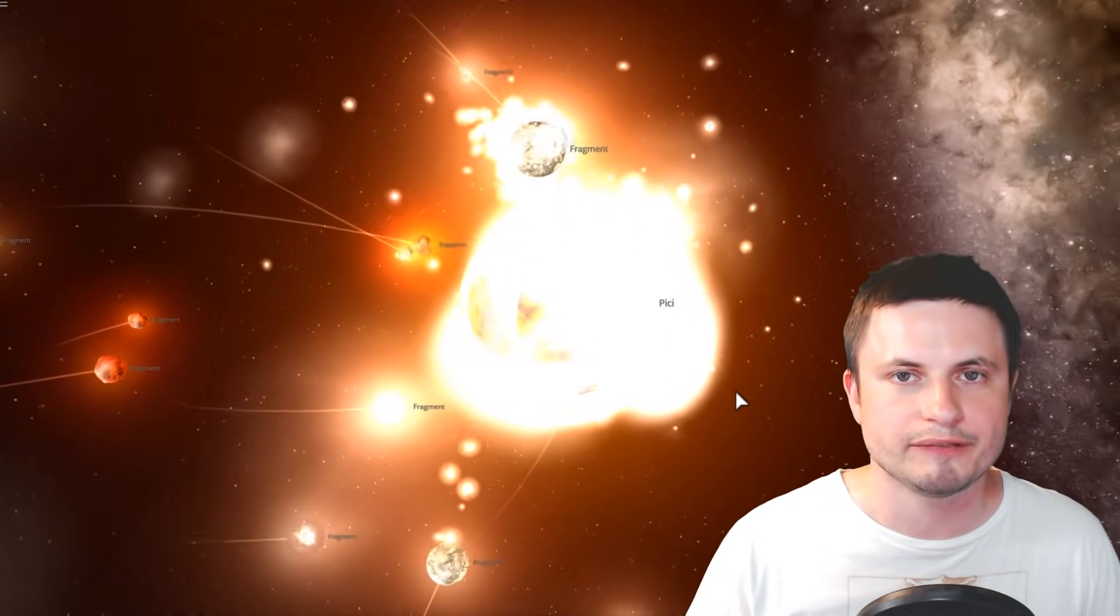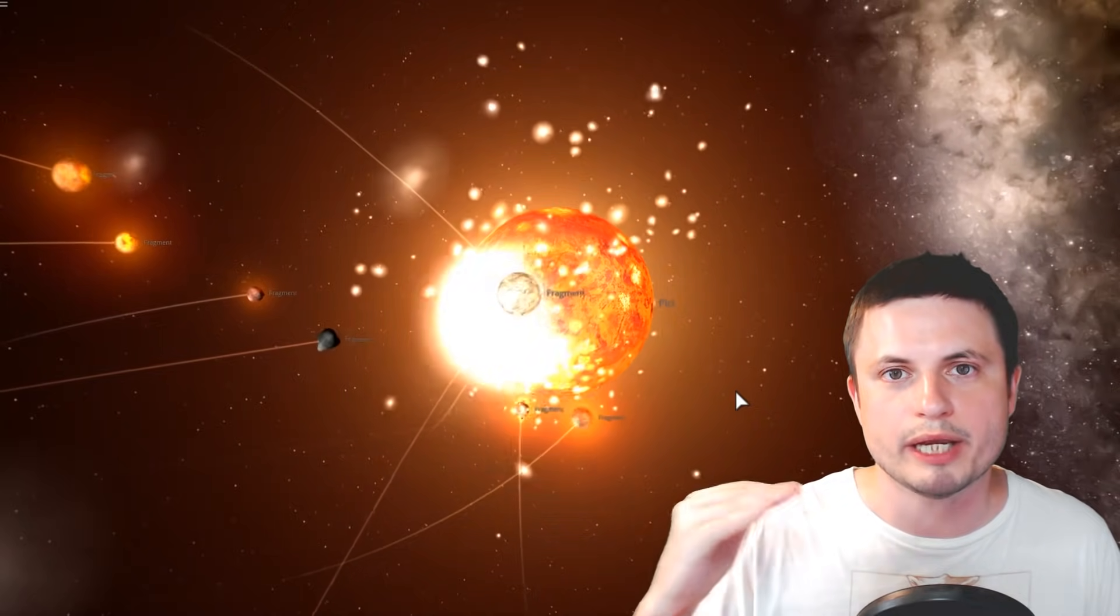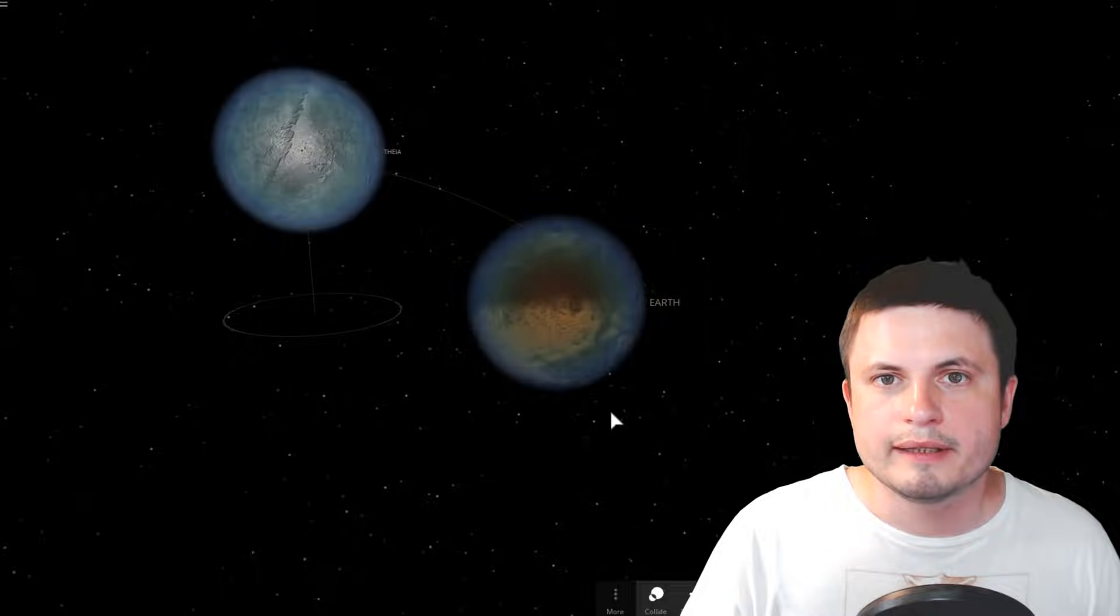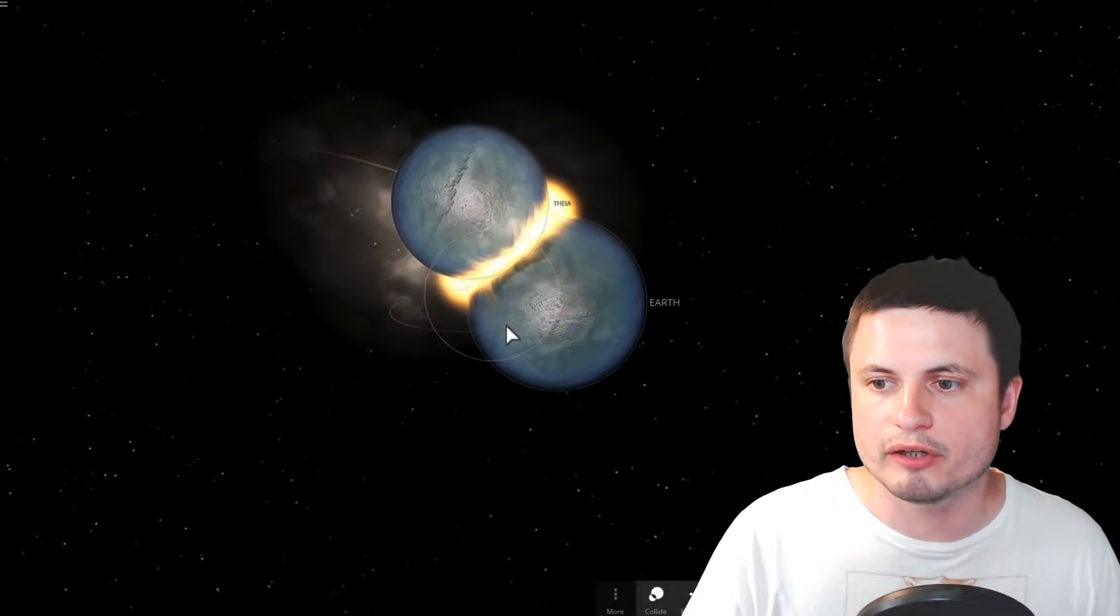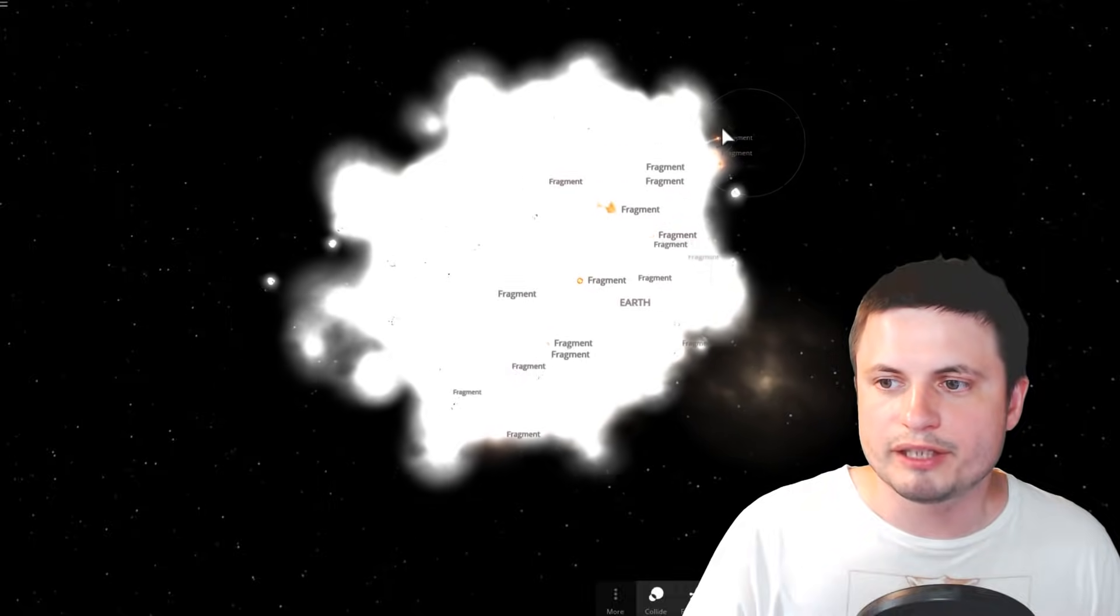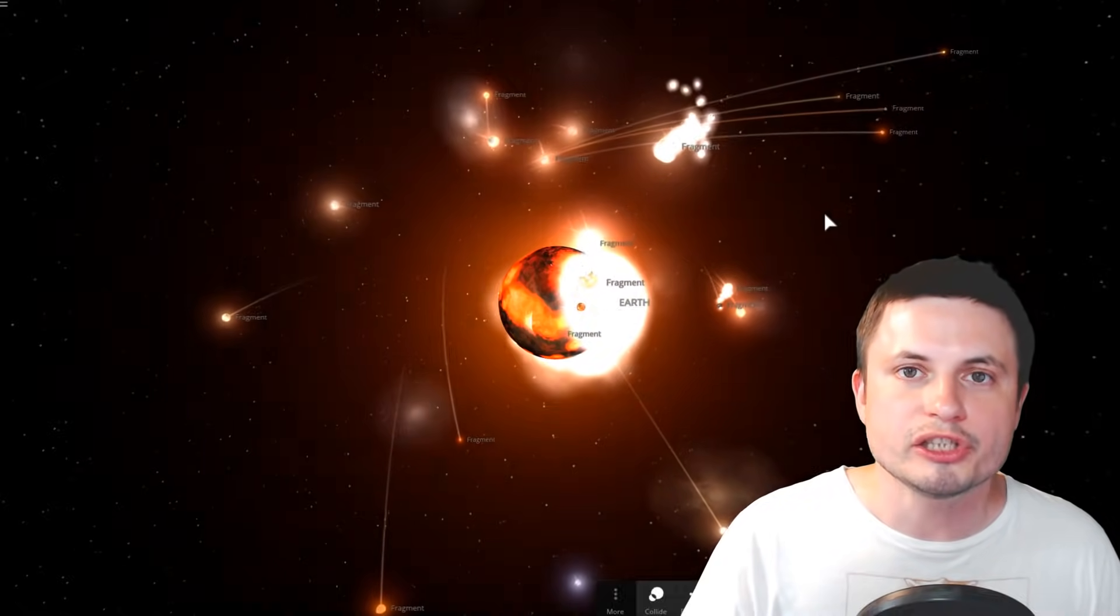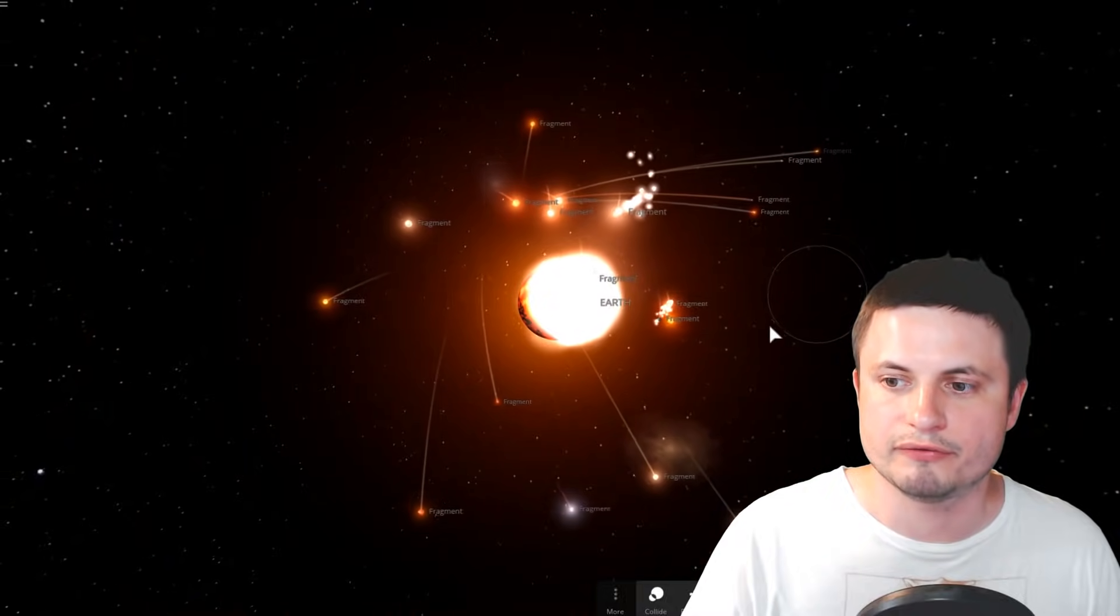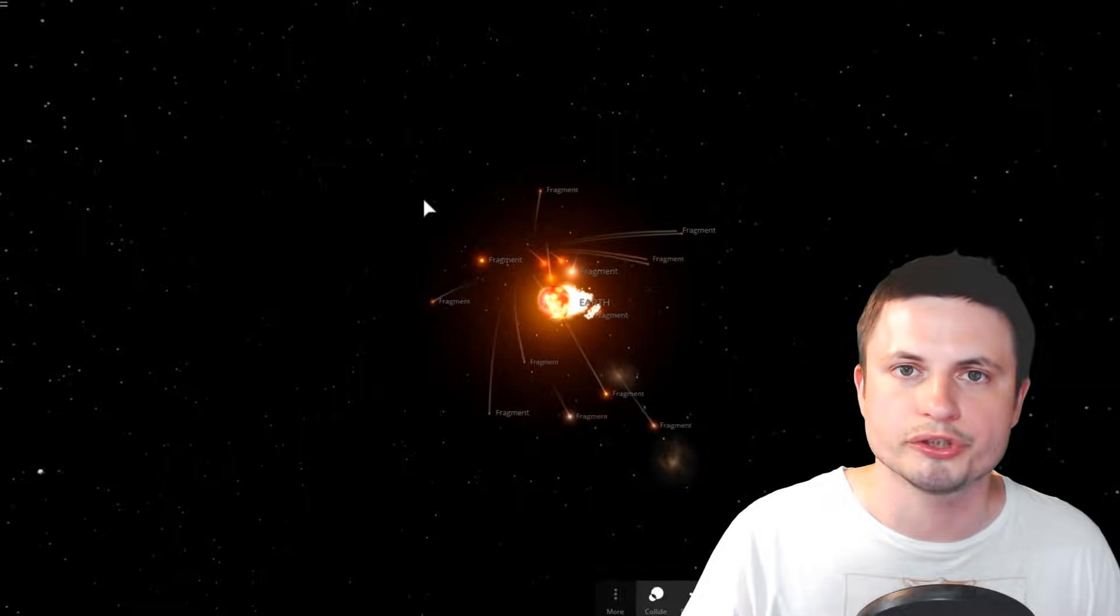For the longest time the scientists believed that it wasn't really direct collision, it was most likely a kind of a swipe, a side swipe. In other words, they most likely passed by the side of the planet earth and a lot of the material was released into the orbit and then all of this stuff eventually solidified and first assumed the lower orbit and eventually moved to the orbit where the moon is today.